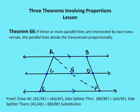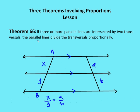Next theorem: if we have three or more parallel lines intersected by two transversals, the parallel lines divide the transversals proportionally. So I have two transversals A-B and C-D, and three parallel lines cut by those transversals. Then x is to y as A is to B. Let's prove that using the Side Splitter Theorem, which we just learned.